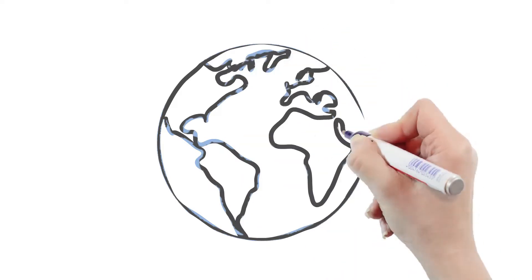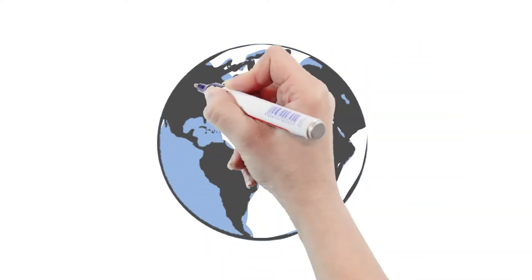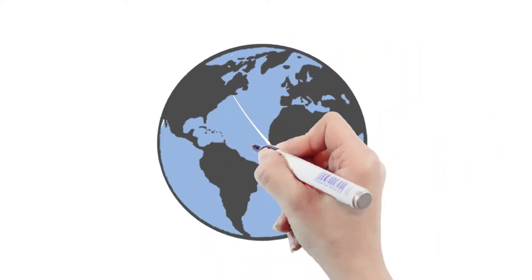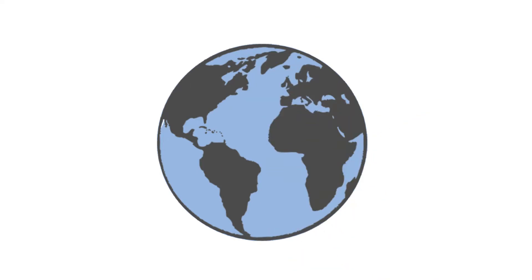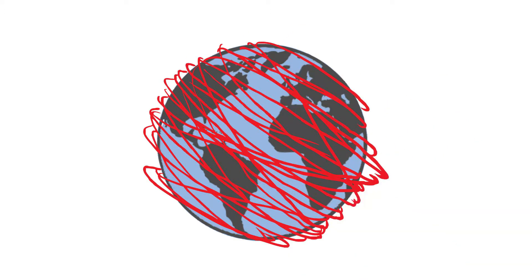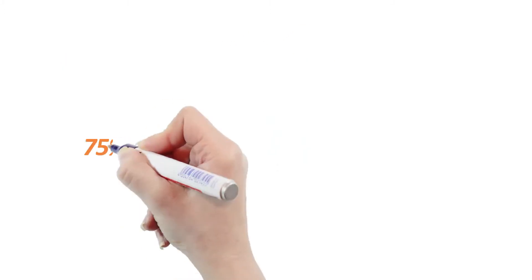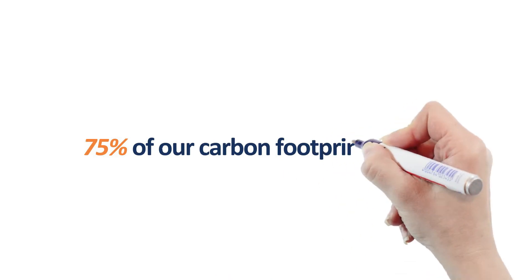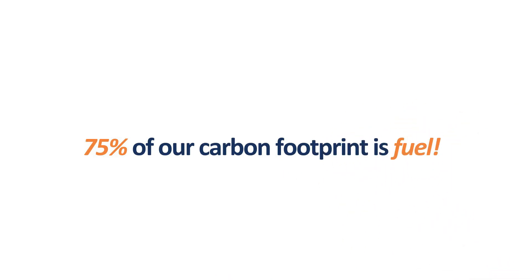Each year Martin Brower delivers products to more than 18,000 restaurants. We drive over 207 million kilometers or in the US 128 million miles. That's equal to 5,000 trips around the world. So it is no surprise 75% of our carbon footprint is fuel.